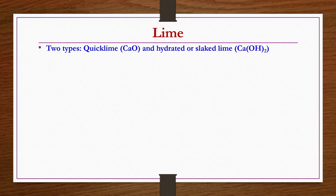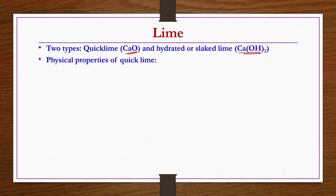In this lecture, what we are going to see? We are going to discuss about lime, which is also one important product coming from the limestone basic raw material. Two types of limes are possible: one is the quick lime, that is calcium oxide, and another one is the hydrated or slaked lime, which is nothing but calcium hydroxide. Now we see the physical properties of both individually.